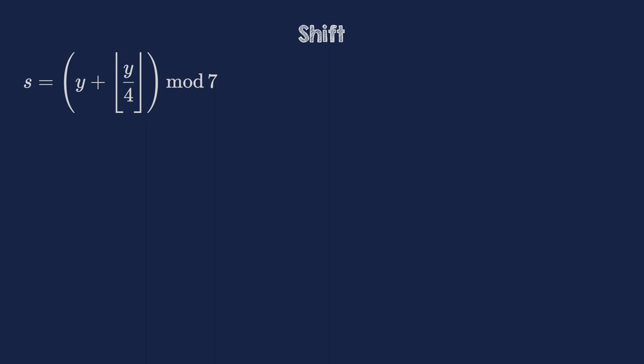Take, for example, the year number y equals 97. First, we have to divide it by 4, which is relatively hard. The result is 24.25, so 24 after rounding down. Then we have to add it back to 97. That's okay, but also a bit tricky. We get 121. Lastly, we have to reduce it mod 7, which means dividing it by 7 to start. And that's really hard now. 7 fits 17 times into 121, and the remainder is 2. So the shift s is 2. With a bit of practice, it becomes manageable, I guess.